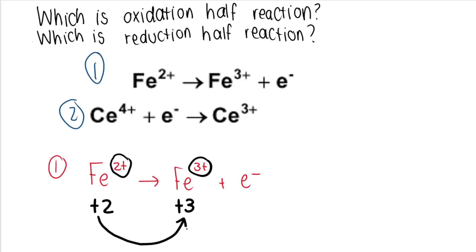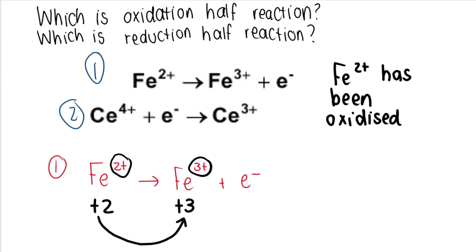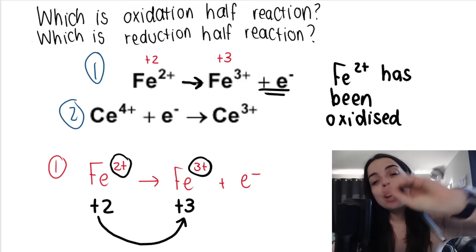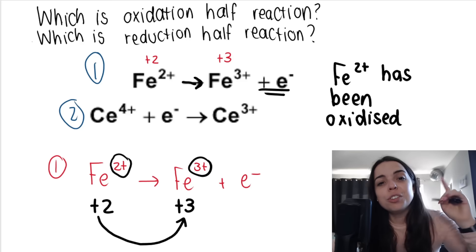The oxidation number increased, and an increase in oxidation number means oxidation has occurred — so Fe2+ has been oxidized. It also makes sense because we can see that Fe2+ has lost an electron. If your electrons are on the right-hand side of the equation, you have lost them. It also makes sense because Fe2+ is becoming more positive — to become more positive, you get rid of the negative things. So if you give away an electron, you become more positive. Reaction one is the oxidation half reaction.